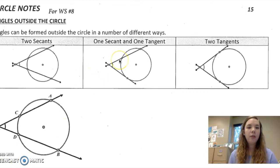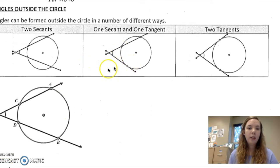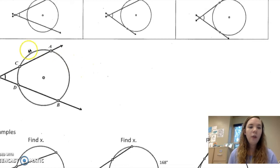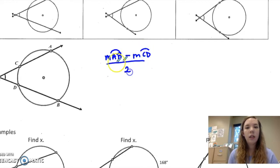If you have two secants outside the circle, you actually are going to, instead of adding them, you're going to subtract them. So I would have the measure of AB minus the measure of CD over 2 is going to give me angle E.